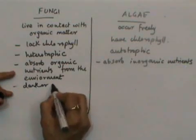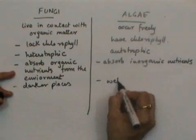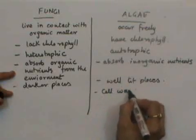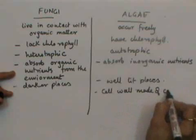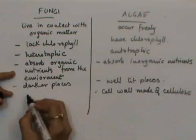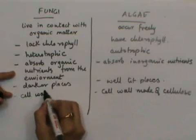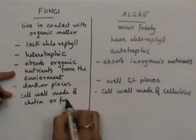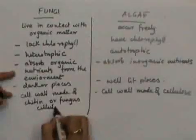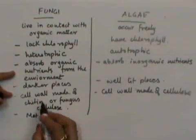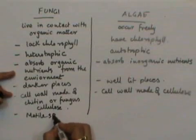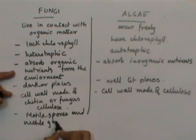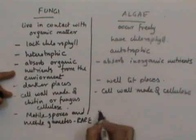Fungi are found in darker places, whereas algae are found in well-lit places. The cell wall of algae is made of cellulose, while in fungi the cell wall is made of chitin, or fungus cellulose. Algae have motile spores and motile gametes, whereas motile spores and motile gametes are rare in the case of fungi.